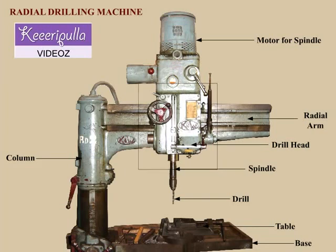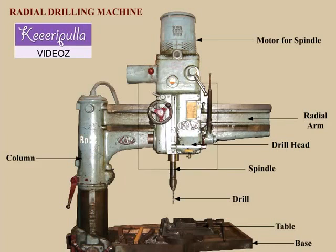Spindle speed and feed mechanism: A constant speed motor is mounted on the drill head. By means of a gear train within the drill head, the speed of the spindle may be varied, and multiple spindle speeds may be attained to suit various machining conditions. Through another gear train provided within the drill head, different feeds of the spindle are attained. The feed is effected by the vertical movement of the drill into the work. Quick traverse feed is provided by a rack and pinion arrangement to bring down the drill rapidly to the hole location and withdraw it after drilling.